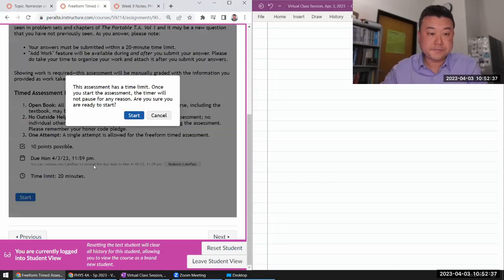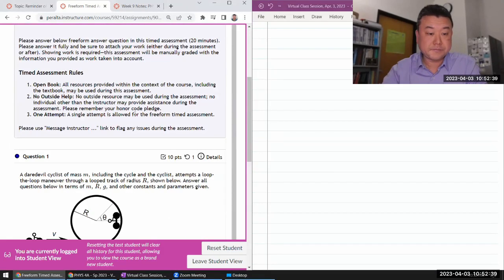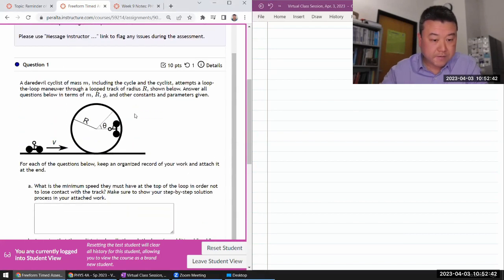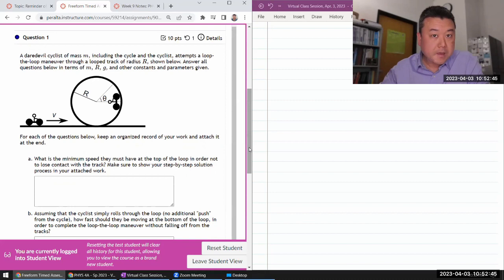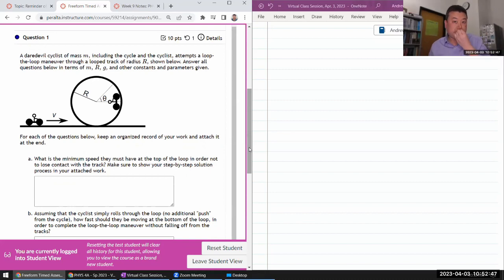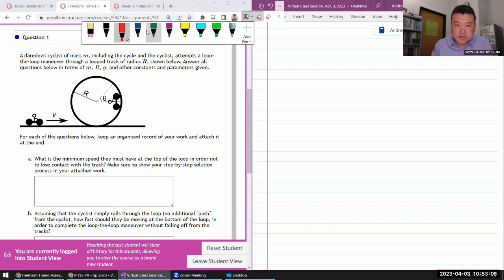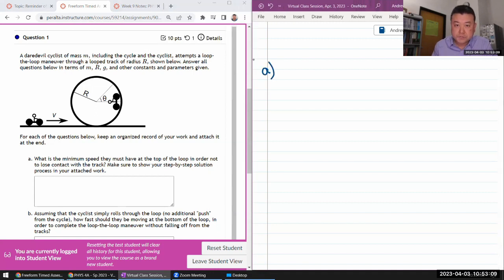Okay, so let me get started. Oh good, this is one of the questions I've done before, so good. It says there are cyclists of some mass, including the cycle and the cyclist, attempting to loop the loop maneuver. So this is the picture that you are considering.